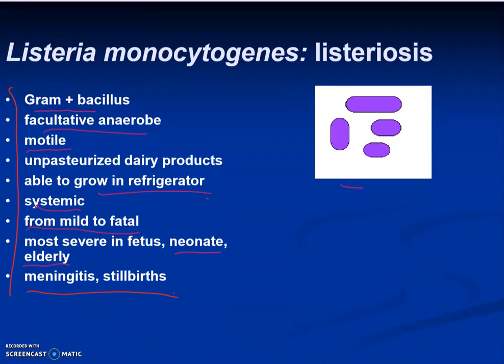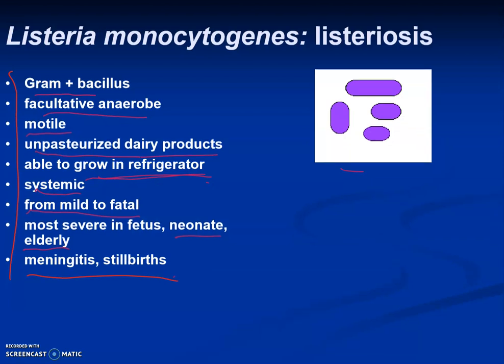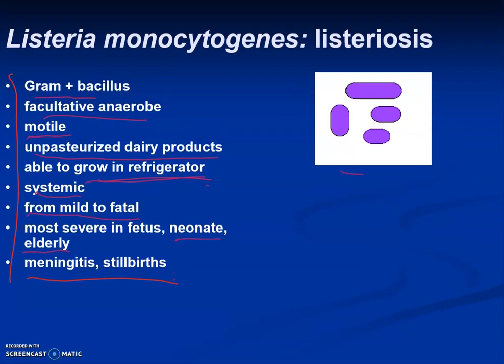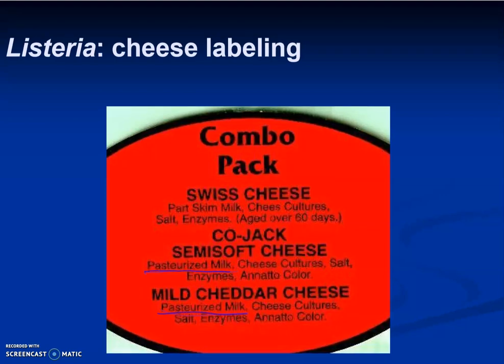Listeria monocytogenes is a gram-positive bacillus, facultative anaerobic, with motility. It's often found on unpasteurized dairy products and is able to grow in the refrigerator — making it particularly dangerous. It can cause systemic disease with symptoms ranging from mild to fatal, most severe in neonates and elderly. Worst-case scenario, it leads to meningitis or stillbirths. Pasteurization prevents the spread of Listeria.